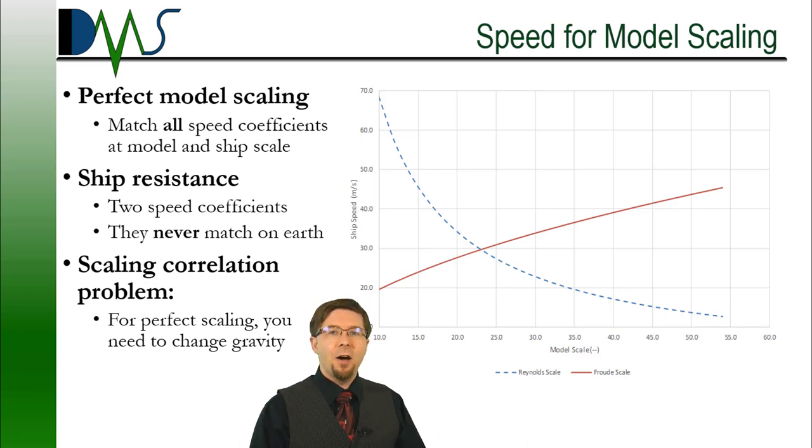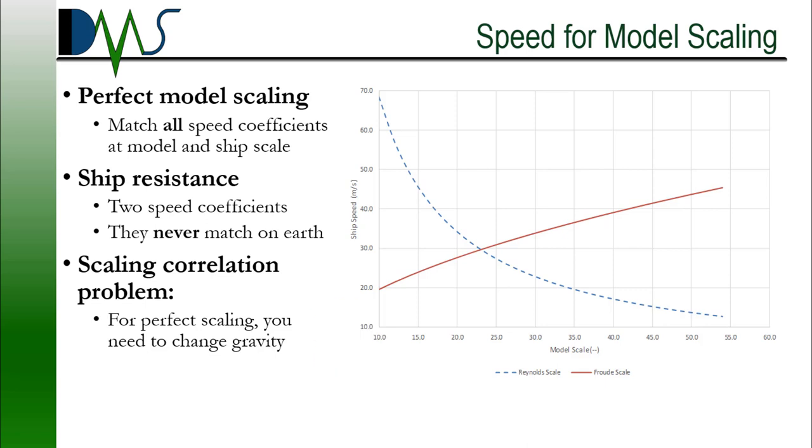Yes! Artificial gravity is what you're going to need to achieve the graph shown on your screen. You see, I did a little bit of a trick to create the graph on your screen. I assumed that the gravity changed between model scale and ship scale. Now, mathematically, this is perfectly valid. Practically, though, gravity stays approximately the same everywhere on planet Earth, at ship scale or model scale. So unless you can invent cheap artificial gravity, the scaling correlation problem is impossible to solve.